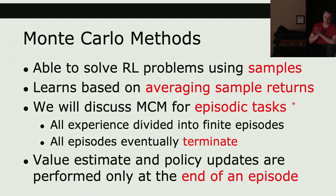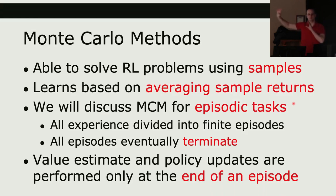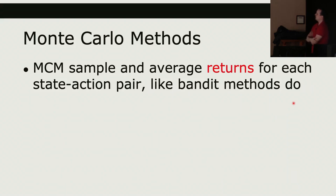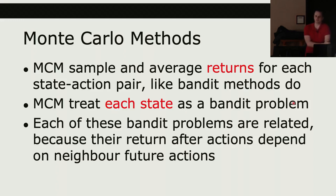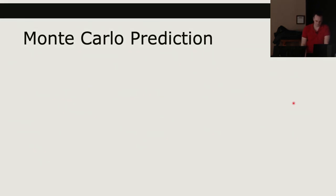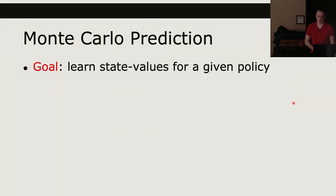Value estimates and policy updates are performed only at the end of an episode. Rather than updating after each action, we take a bunch of actions to generate an entire episode, then do our update at the end. Monte Carlo methods sample and average returns for each state-action pair, essentially treating each state as a bandit problem. The goal of Monte Carlo prediction is to learn state values for a given policy.